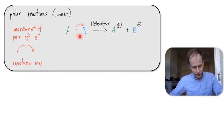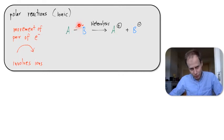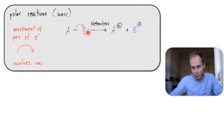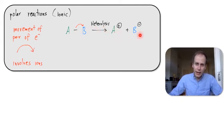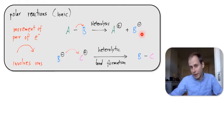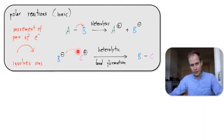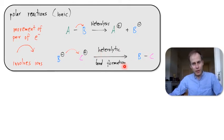Here is a covalent bond between A and B. The two electrons that make this covalent bond both jump to B, maybe because B is more electronegative. This process causes the covalent bond to be broken and we call this heterolysis — it results in the formation of a cation and an anion. The anion can continue to react with another cation to form a new bond; this is called heterolytic bond formation, and the resulting product is again a neutral molecule.